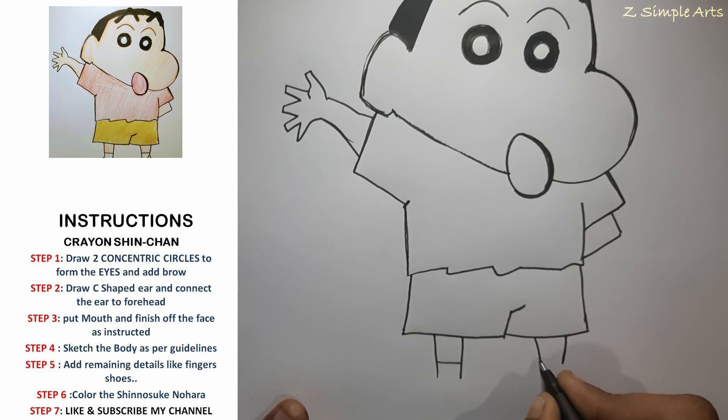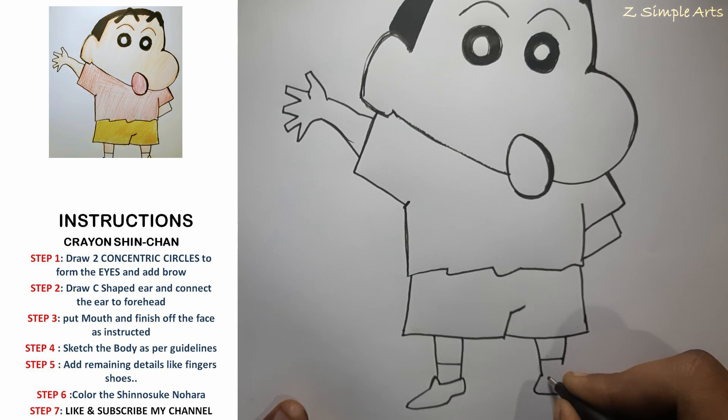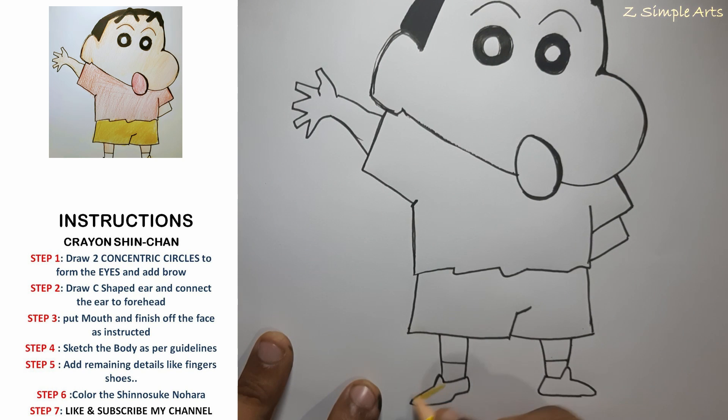Then we'll just mark it, the cross line. Drawing Shin Chan is an easy part. Similarly on the other side. Now that we have finished the sketch of Shin Chan Hara.